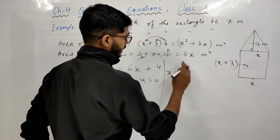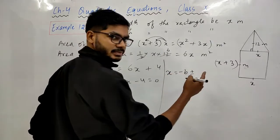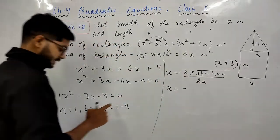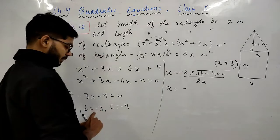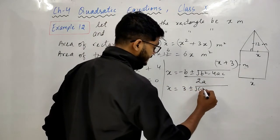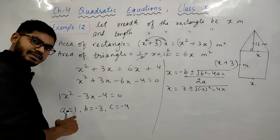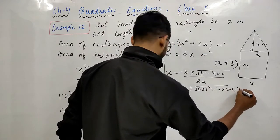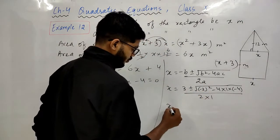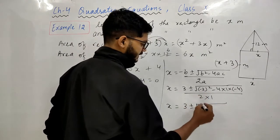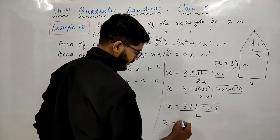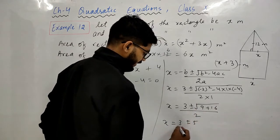अब quadratic formula लगाएंगे: x = (−b ± √(b² − 4ac)) / 2a। यहाँ −b = 3, b² = 9, 4ac = 4 × 1 × (−4) = −16। So under root में आएगा 9 + 16 = 25, और √25 = 5। तो x = (3 ± 5) / 2।